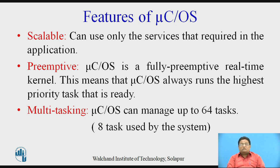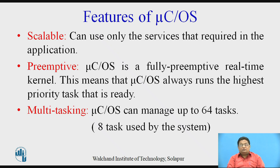MUCOS supports multitasking and is able to manage up to 64 tasks. Out of these 64 tasks, 8 are used by the kernel system itself, so 64 minus 8 — that is, 56 tasks — can be defined by the user.